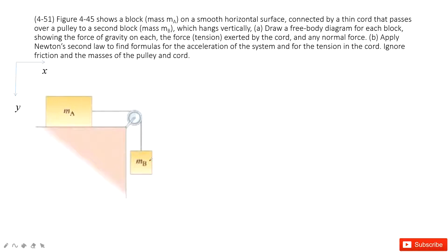First, look at object B. For B, we have the gravity and the tension from the cable. For A, we have the gravity, the normal force from the table to object A, and the tension.